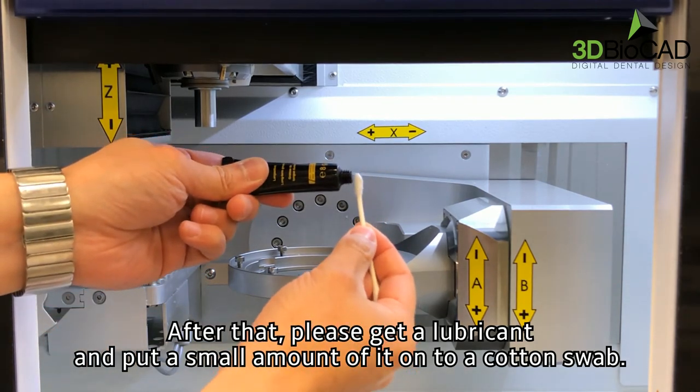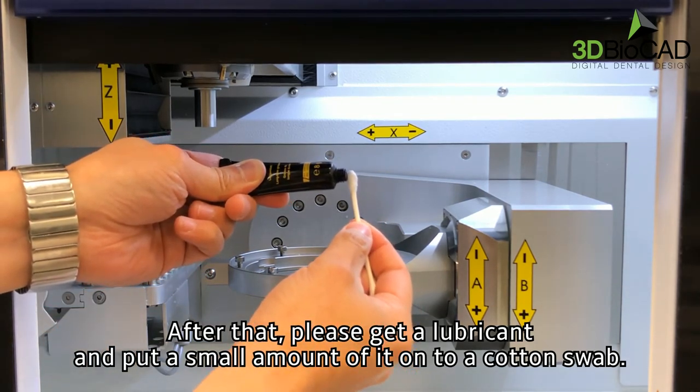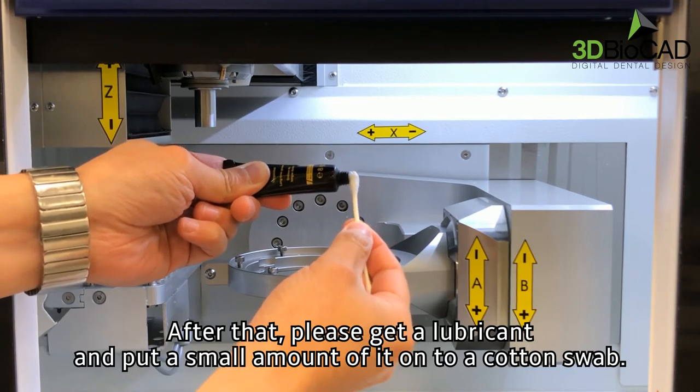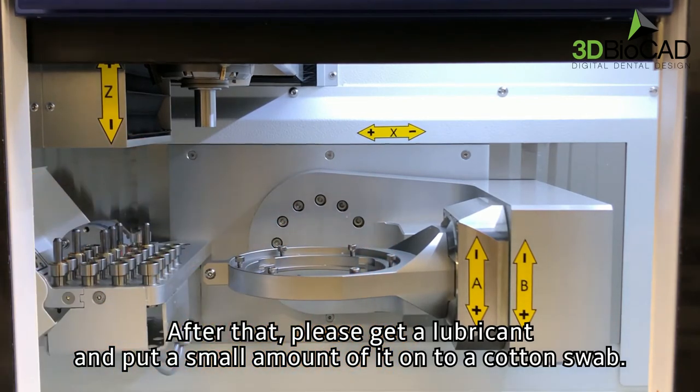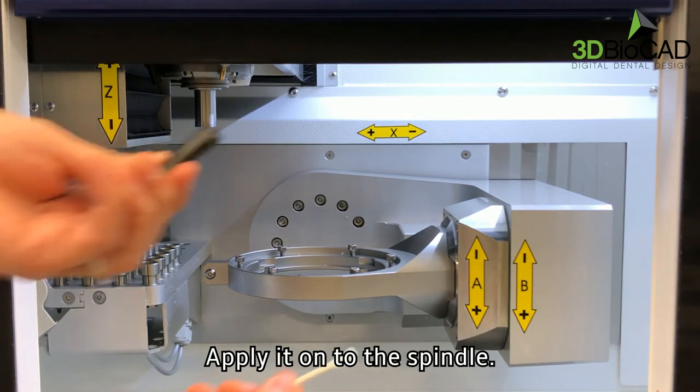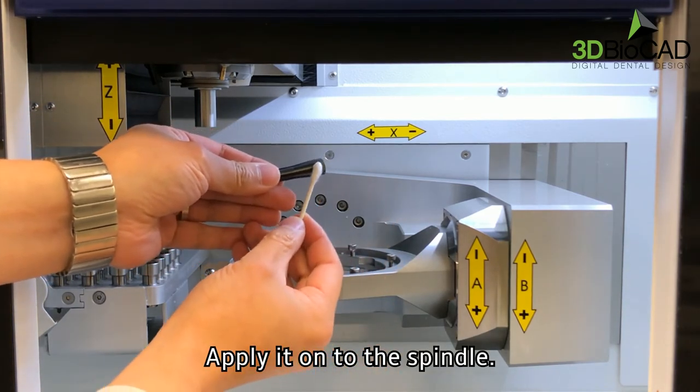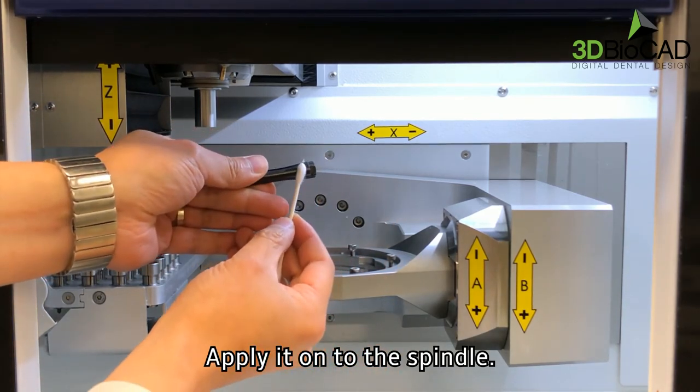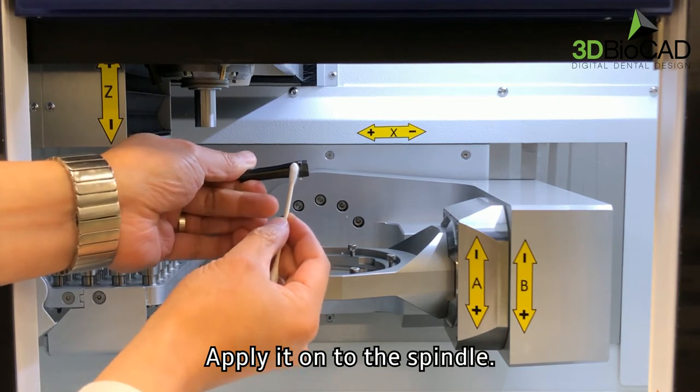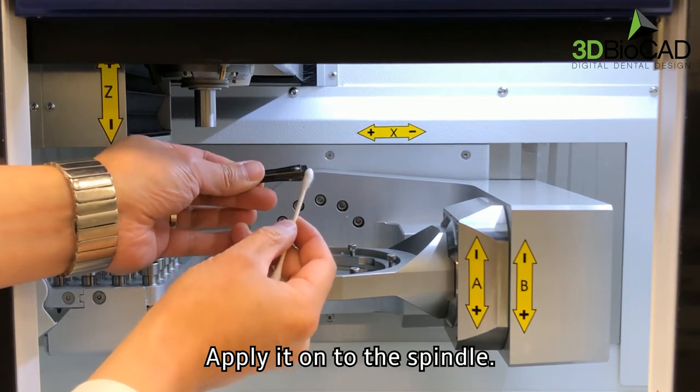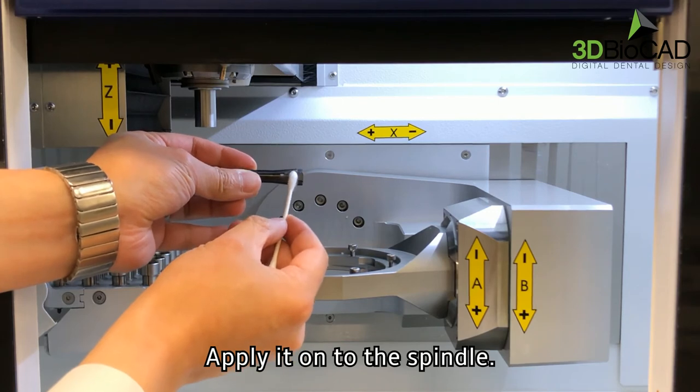After that, please get a lubricant and put a small amount of it onto a cotton swab. Apply it onto the spindle.